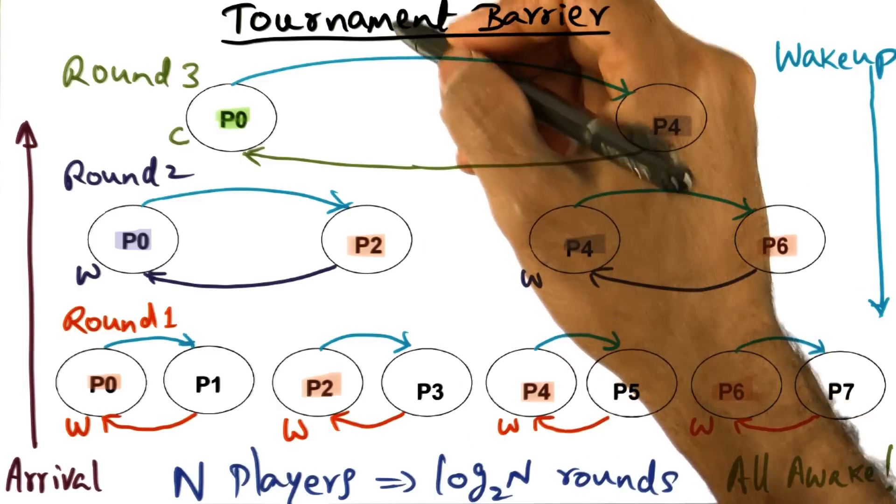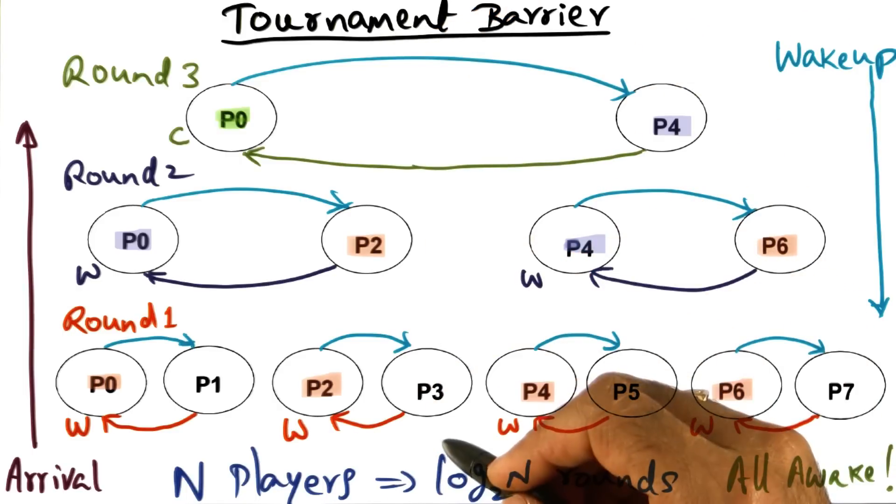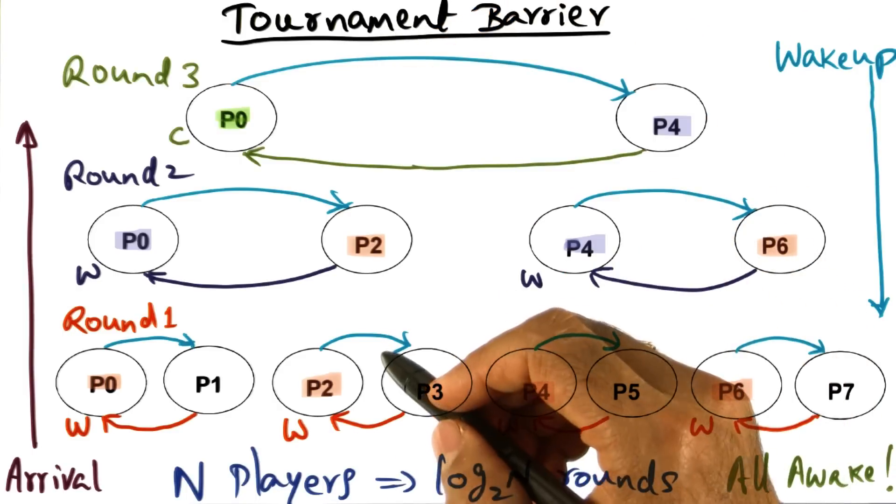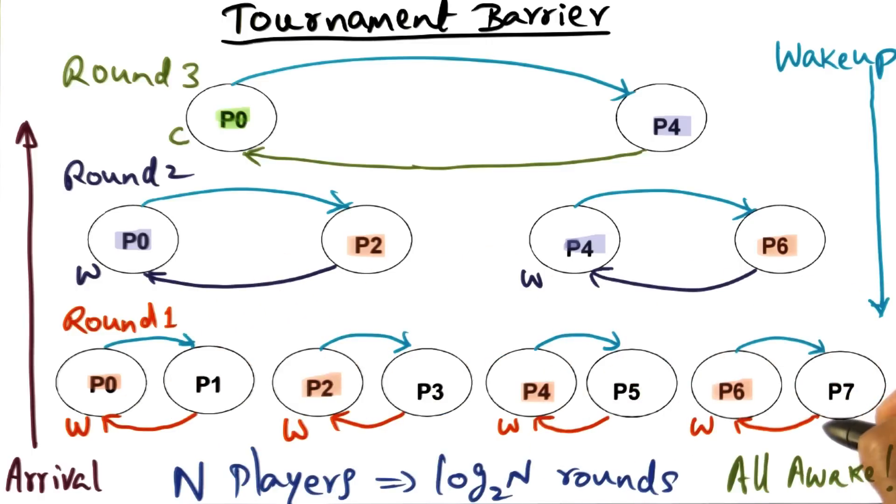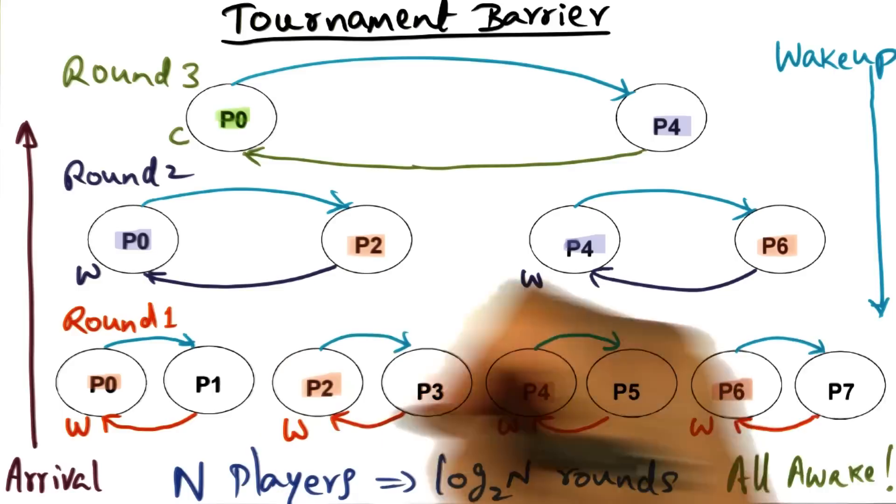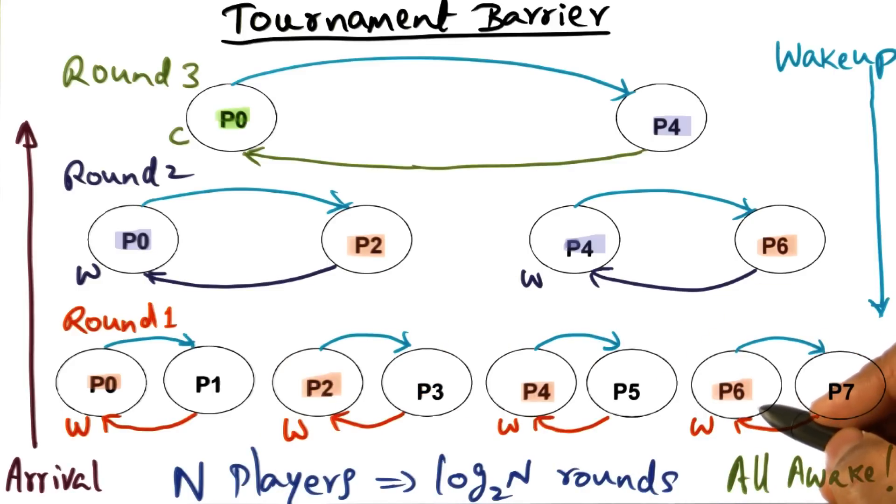The other important thing where tournament has an edge over MCS is the fact that tournament barrier works even if the processors are in a cluster. It's not a shared memory machine, only message passing is the way they can communicate with one another. Even in that situation, you can implement the tournament barrier.